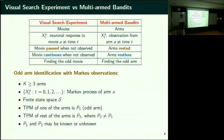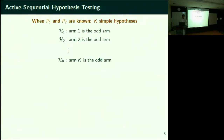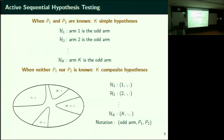So ultimately it is a composite hypothesis testing problem. When P1 and P2 are known, all you have to do is identify which is the true hypothesis among k hypotheses. Is arm 1 the odd arm? Is arm 2 the odd arm? There were eight locations — which location has the odd movie? H1 through H8 in that example.